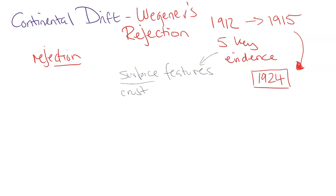What Wegener failed to really prove — a big downfall in terms of the scientific method — was how these continents moved. In 1924, without satellites, the internet, remote sensing, or different wavelengths, continents of millions and millions of tons of rock were a very hard idea to process, even for scientists.